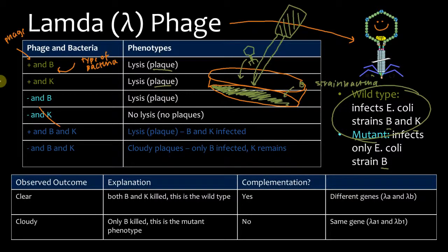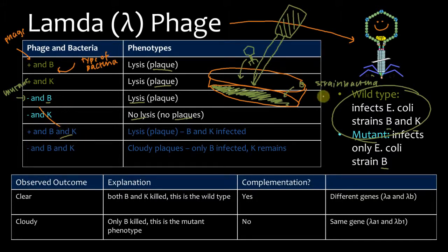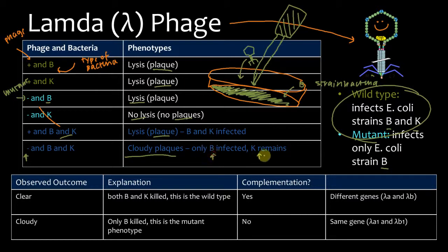Similarly, if you put wild type phage on K cells, it'll result in a plaque because there'll be lysis — it'll kill all bacteria. If you take the mutant and plate it on B cells, you'll also have lysis because mutants kill B cells. But if you take the mutant and plate it on K cells, there's going to be no lysis or no plaques because mutants don't infect K cells. So what happens if we combine them and plate on B and K cells together? You get cloudy plaques because only the B is infected — K remains.